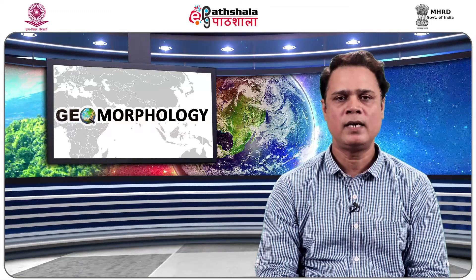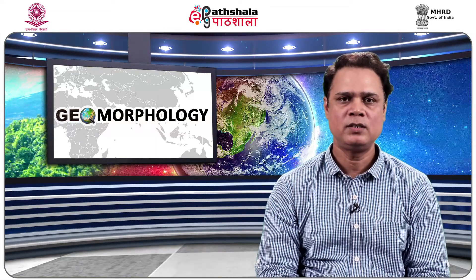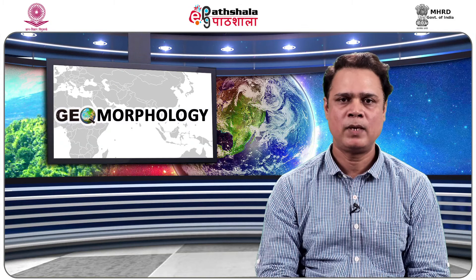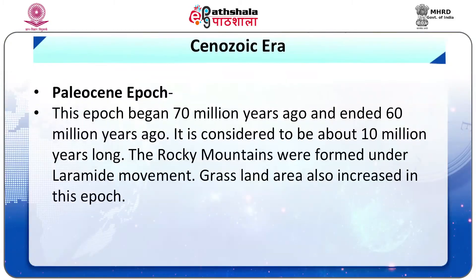It was during this era that the vegetation increased and the apes appeared. The Paleocene epoch began 70 million years ago and ended 60 million years ago, considered to be about 10 million years long. The Rocky Mountains were formed under the Laramide movement. Grassland area also increased in this epoch.